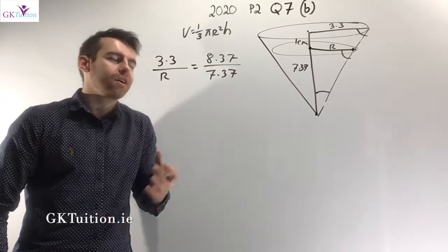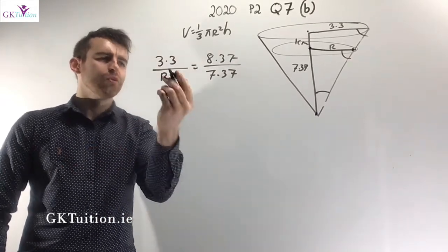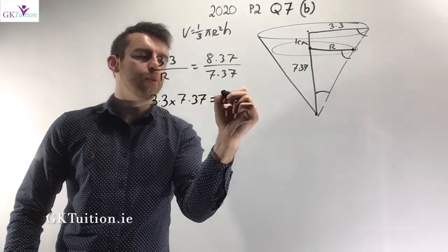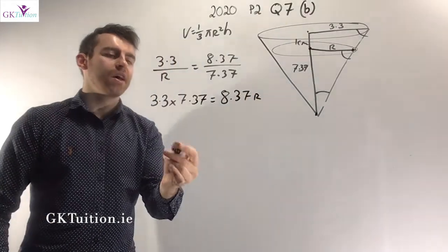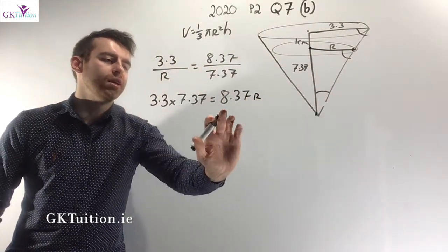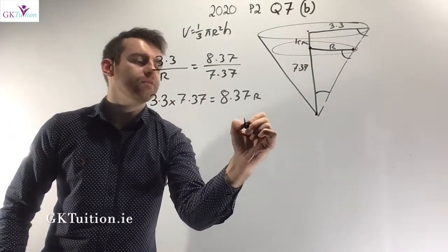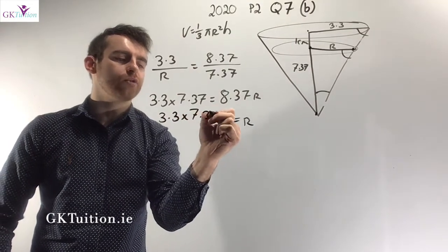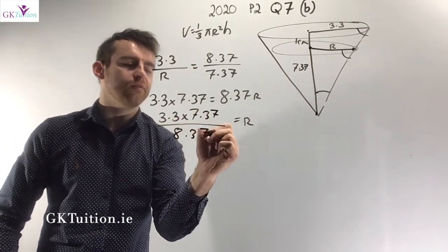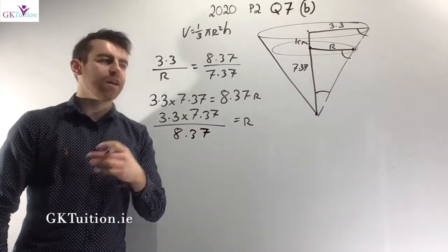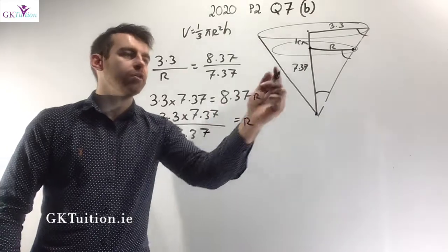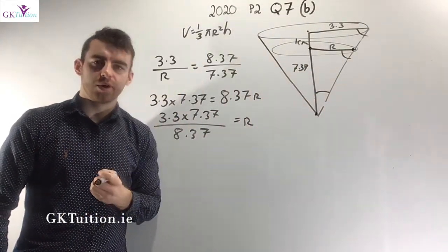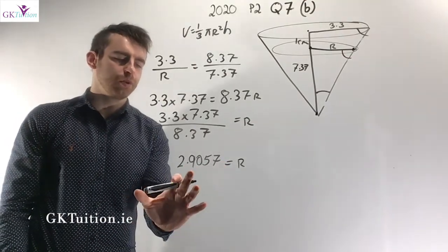Once I know r and h, I'll substitute into the volume formula. Multiplying both sides by 7.37 and by r gives 3.3 × 7.37 = 8.37 × r. Dividing both sides by 8.37: r = (3.3 × 7.37) / 8.37. Plugging into the calculator, r works out as 2.9057.